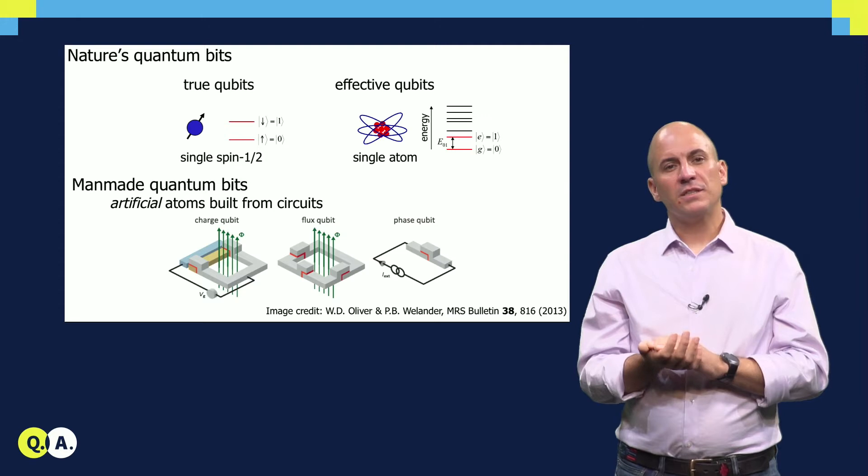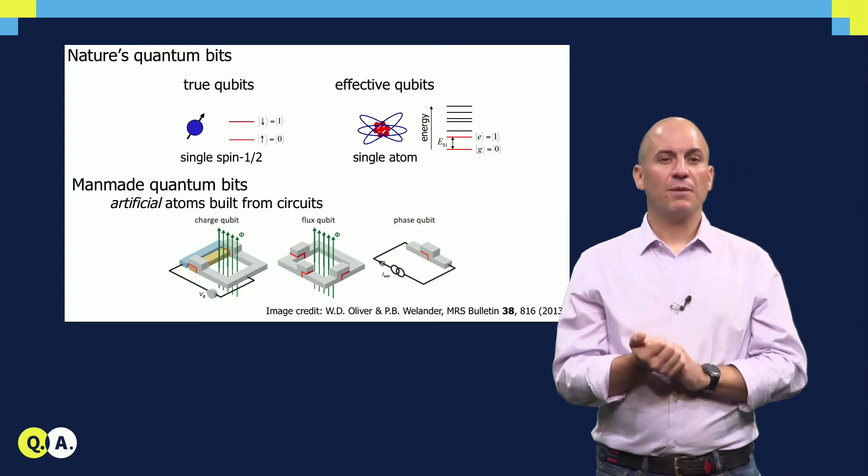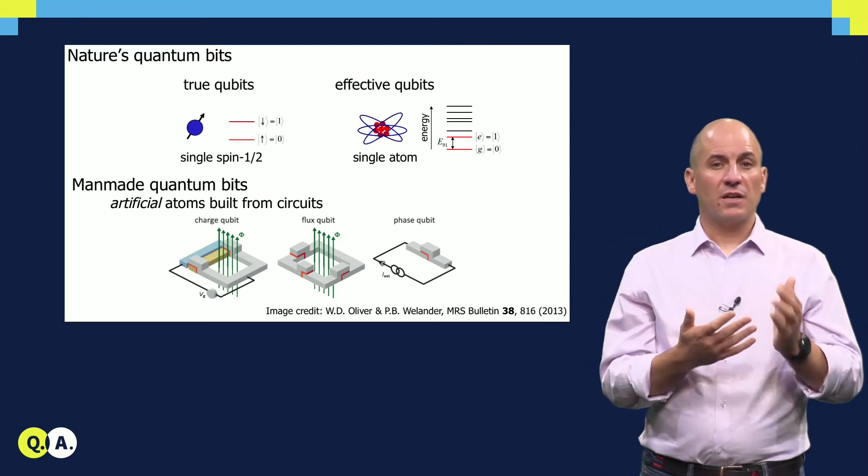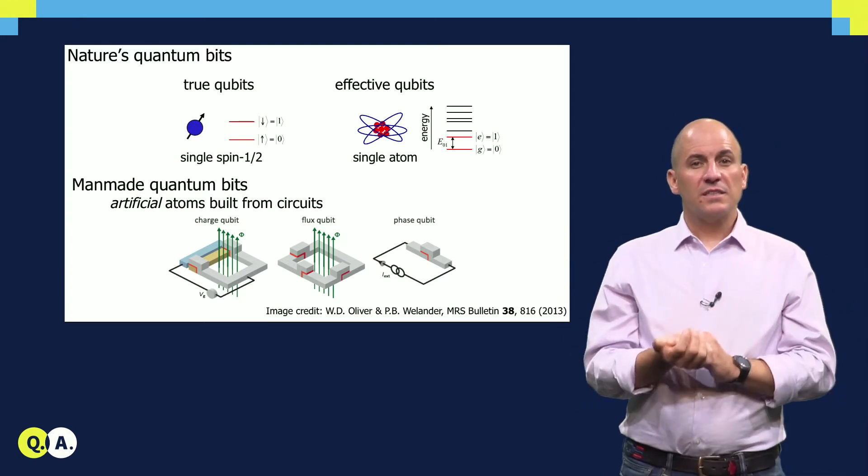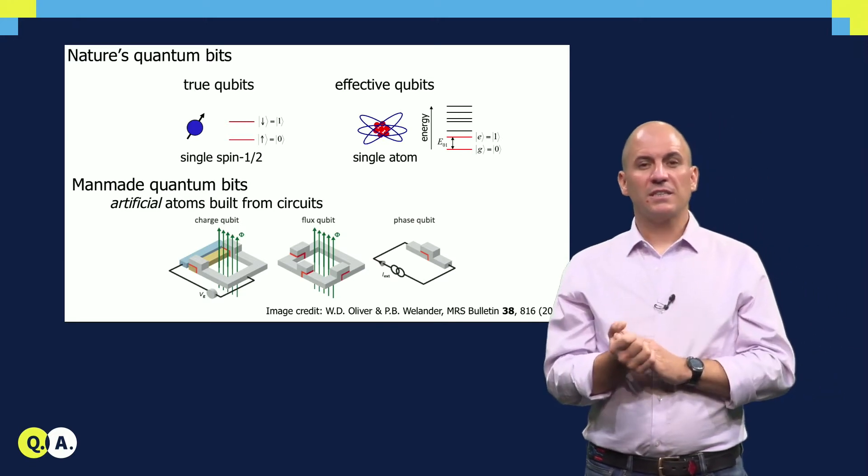While the form of the Hamiltonian describing them quantum mechanically is well known, the parameters of this Hamiltonian cannot be perfectly targeted in fabrication. This has interesting implications for scaling up our quantum processors, which I will discuss in a later video.